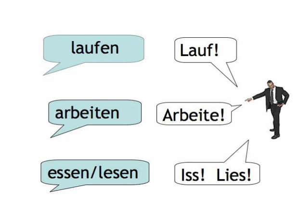Remember, too, that the irregular verbs with a stem change from E to I or IE use the changed stem for the imperative, so that you get, for example, 'iss' and 'lies'.